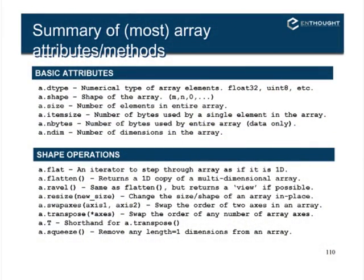There are shape operations that morph the shape of your array. Flat, flatten, and ravel are all similar: flat always returns a view but as an iterator, not an array; flatten always returns an array but always as a copy, never a view; and ravel might be either — it does the most efficient thing from a memory standpoint, which could be a view or a copy.